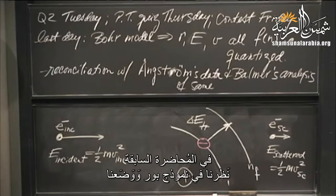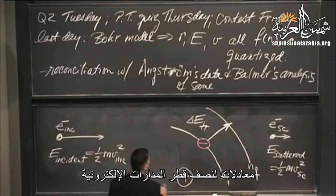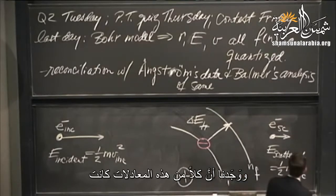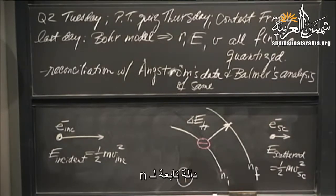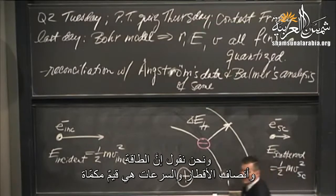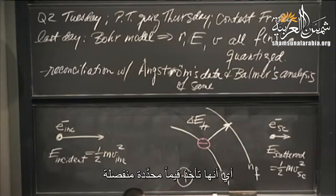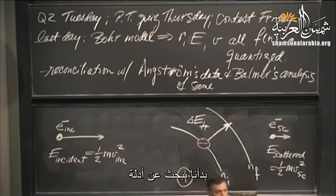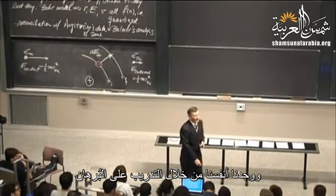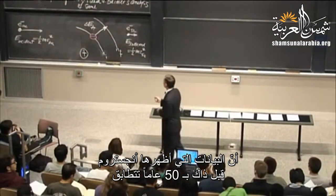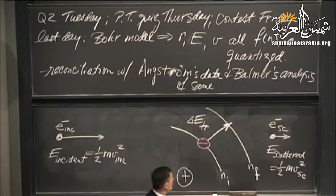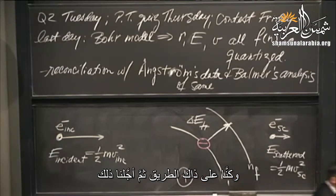Last day, we looked at the Bohr model and developed equations for the radius of the electron in the orbit of a one-electron atom, the energy of the electron, and the velocity of the electron. We found that for all of these, they were a function of n, the quantum number. n takes on discrete values — 1, 2, 3, and so on. We say that these energies, radii, and velocities are quantized. Then we started looking for evidence, finding ourselves in an exercise of reconciliation with data taken by Angstrom about 50 years earlier and fit to an equation by Balmer. We were partway through that and adjourned.